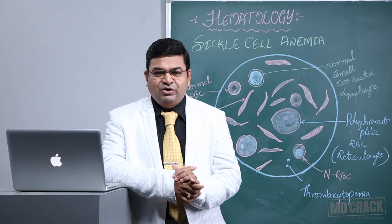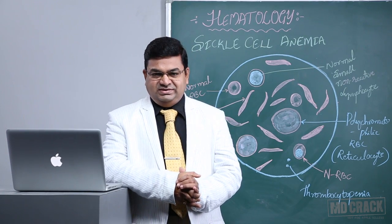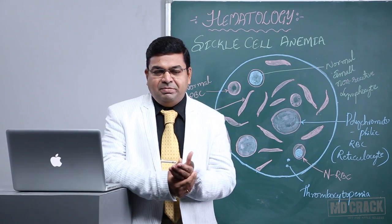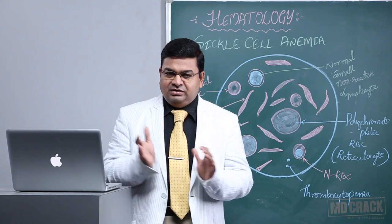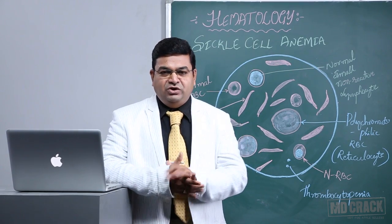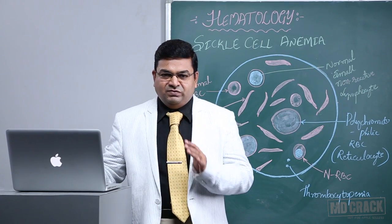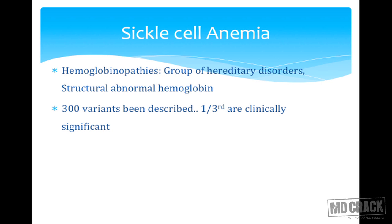My friends, let us have a look at one more important hemolytic anemia — sickle cell anemia. It is one of the important hemoglobinopathies, a group of hereditary disorders where there is structurally abnormal hemoglobin. More than around 300 variants have been described and one-third of them may remain clinically significant.